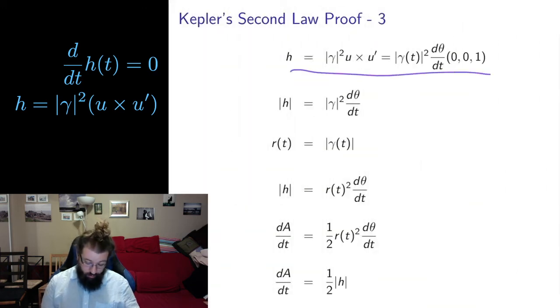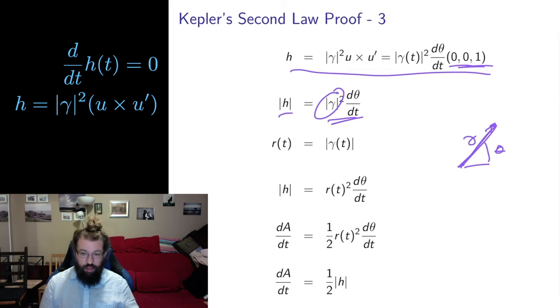If I look at the length of this thing, well, the length of this is one. So I just get |γ|²dθ/dt. Length of gamma is again r. That was the whole setup, is that if we have gamma being the position here with theta here, gamma is exactly the distance out from the origin. So the length of gamma is the radius term in polar coordinates. So replace this gamma with r so that the length of h is r(t)²dθ/dt.